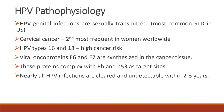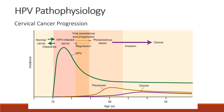HPV types 16 and 18 are associated with high cancer risk. The viral oncoproteins E6 and E7 are synthesized in cancer tissue, and these proteins will complex with RB and P53 as target sites. Nearly all HPV infections are cleared and undetectable within 2 to 3 years. A graph shows the incidence versus age in cervical cancer progression, with HPV infection peaking at age 15, declining and remaining constant through age 45, while pre-cancer lesions rise at age 30 and progress to cancer over the years.